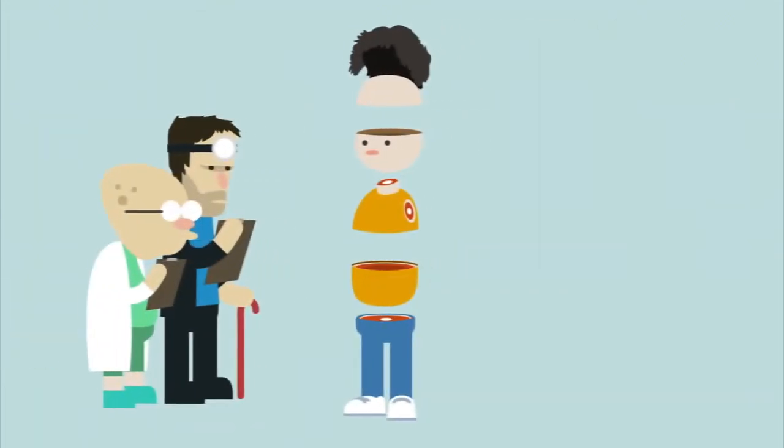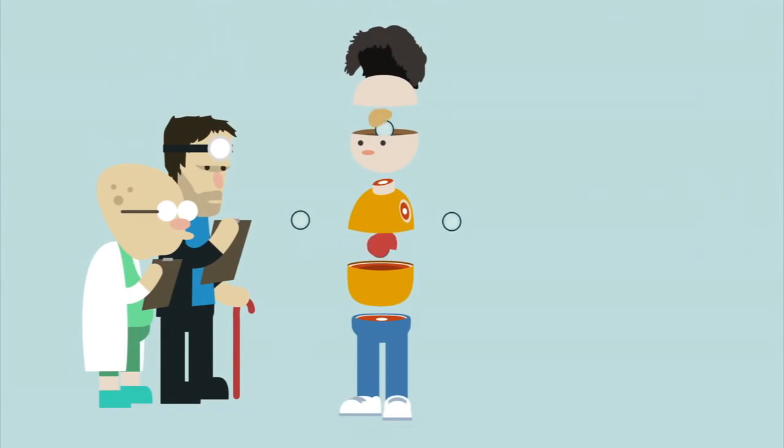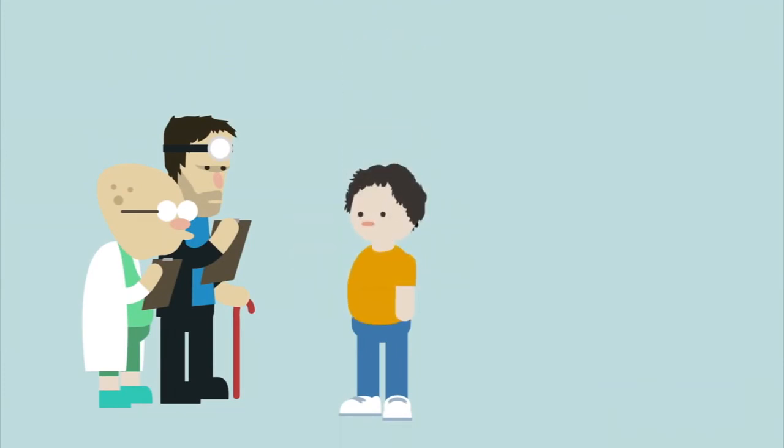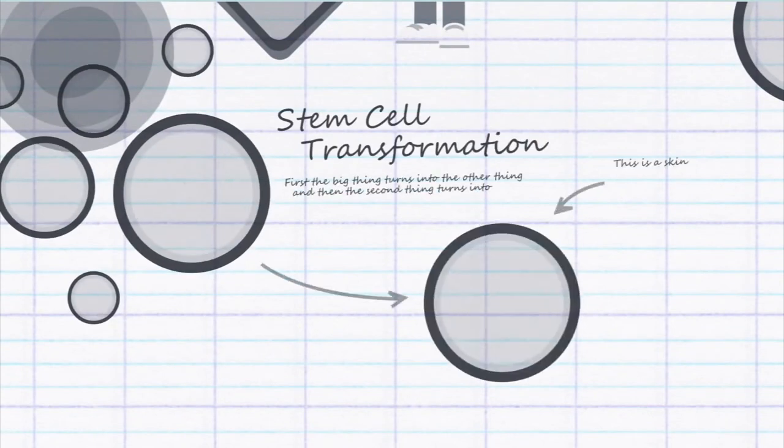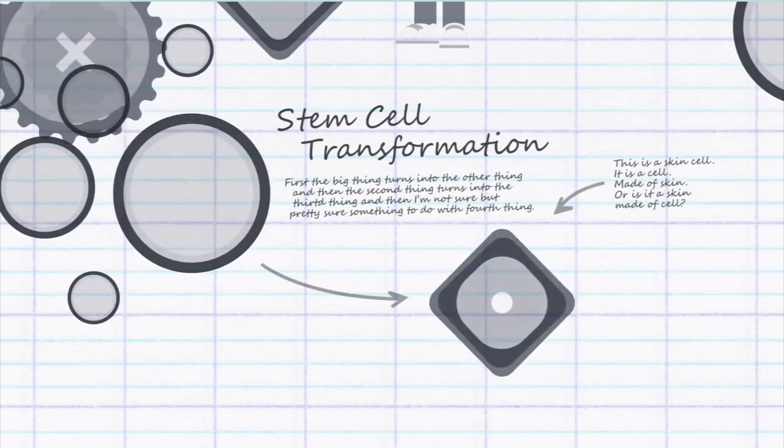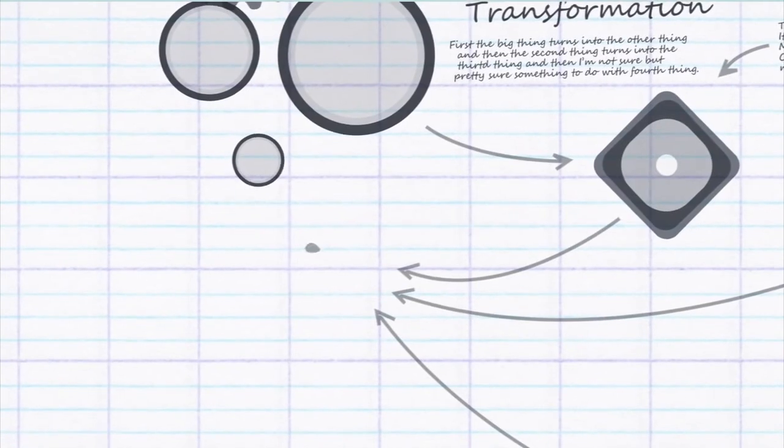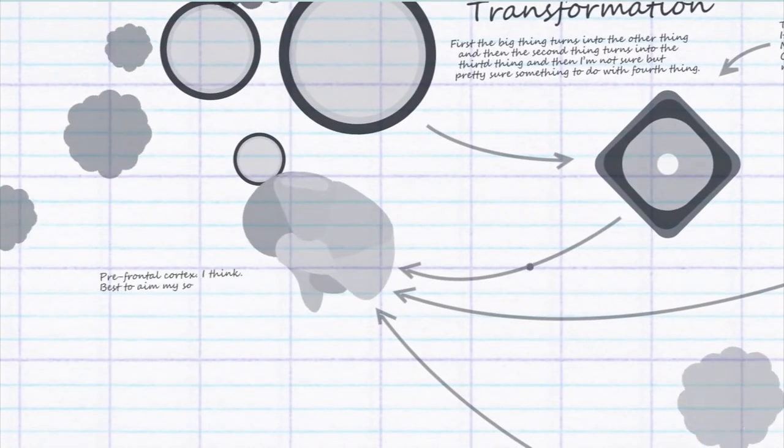While scientists and doctors hope to use all of these kinds of stem cells to create new tissue to heal your body, they can also use stem cells to help understand how the body works. Scientists can watch stem cells develop into tissue to understand the mechanisms that the body uses to create new tissue in a controlled and regulated way.